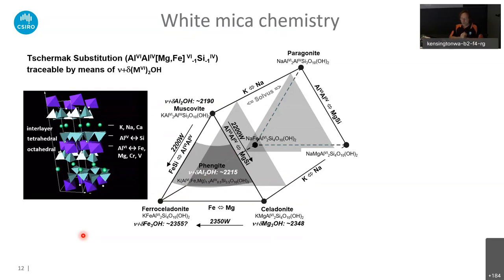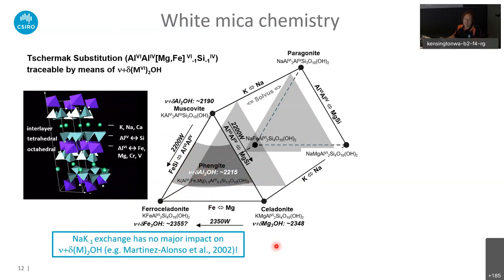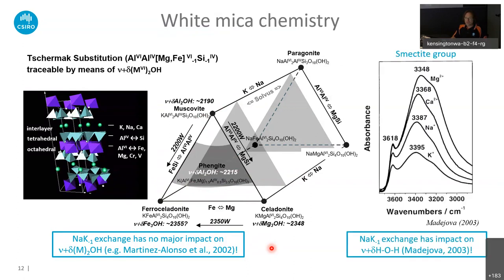There are lots of case studies where people did microprobe work to map paragonite and distinguish it from muscovite and phengite — that's all good — but there are also cases where people try to use just reflectance spectroscopy to distinguish between paragonite and muscovite. Unfortunately, this is not possible. In the compositional space of white micas, muscovite typically absorbs around 2190 nm. Doing the Tschermak exchange and moving toward celadonite crosses the phengite field, and the 2200 nm feature shifts to around 2250 nm. But as Martínez Alonso has shown, there's no major impact of the sodium-potassium exchange on the 2200 nm absorption feature.